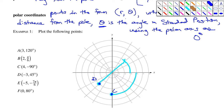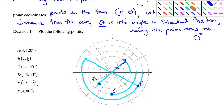Recapping point D: we went up to 45 degrees, and instead of stopping at radius 3, we went backwards through the pole to where 3 is on the other side. Point E is (−5, −7π/6): negative 7π/6 gives this angle, and then the negative 5 means we travel back through the pole to get that point. Point F is (0, 80°): since the radius is 0, the angle doesn't matter — this is a representation of the pole itself.